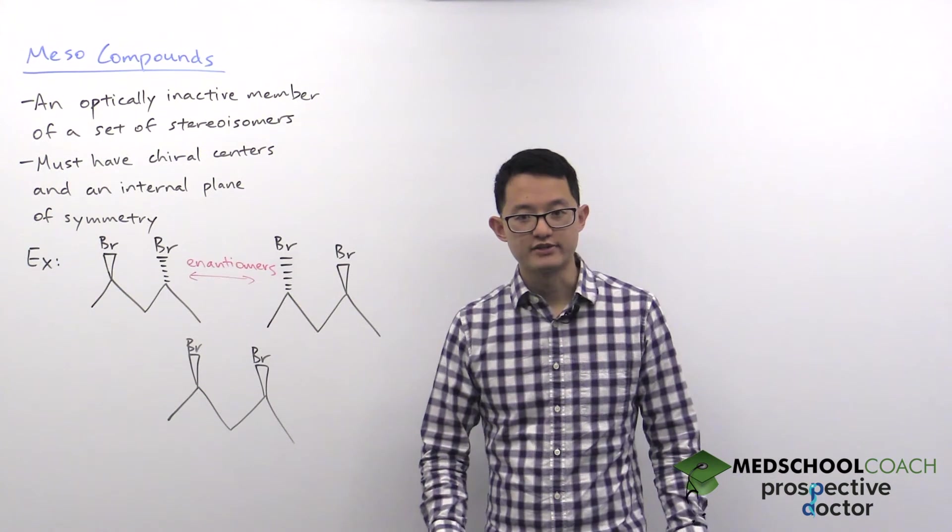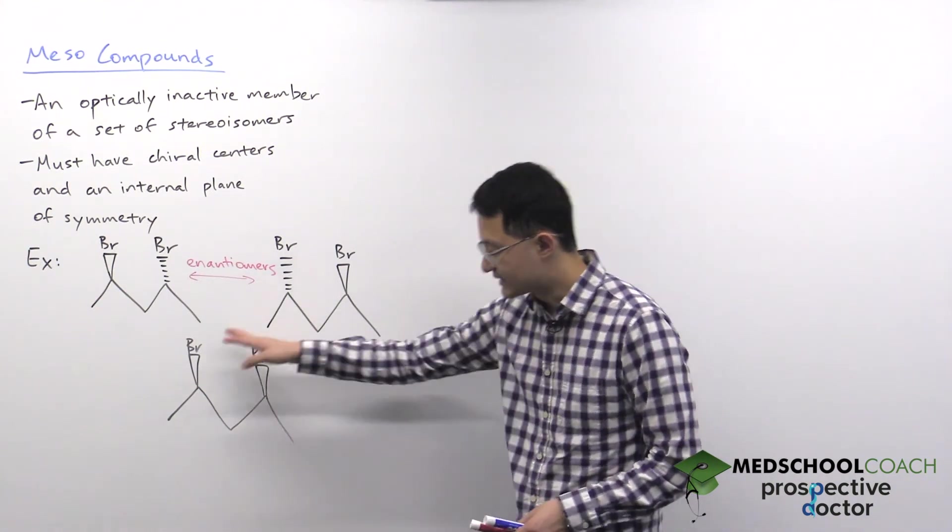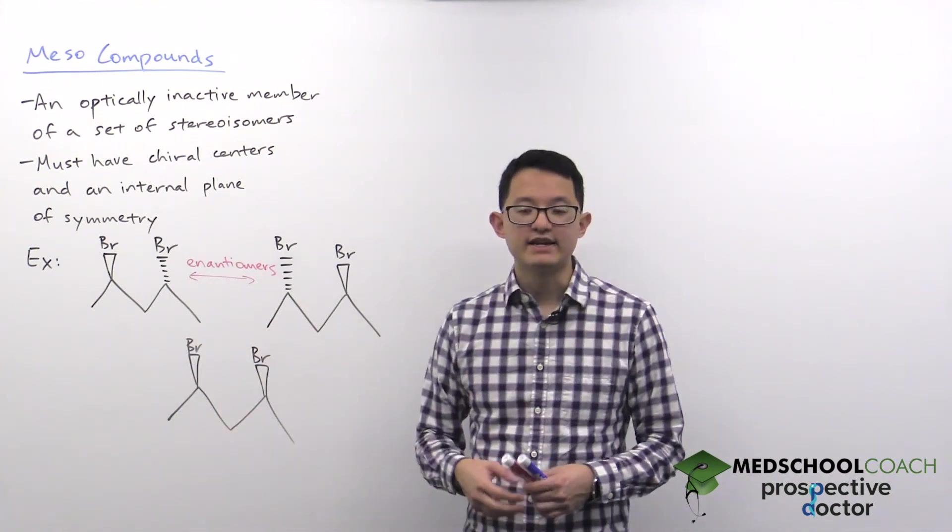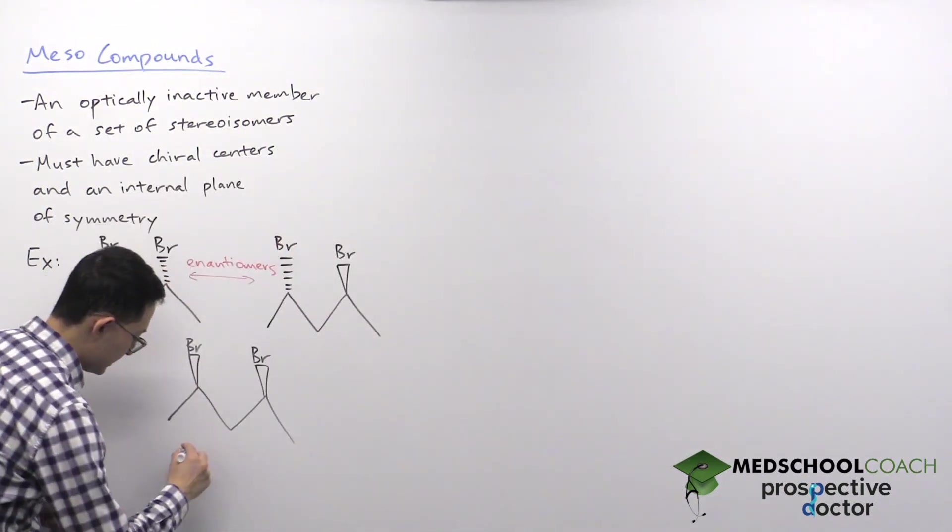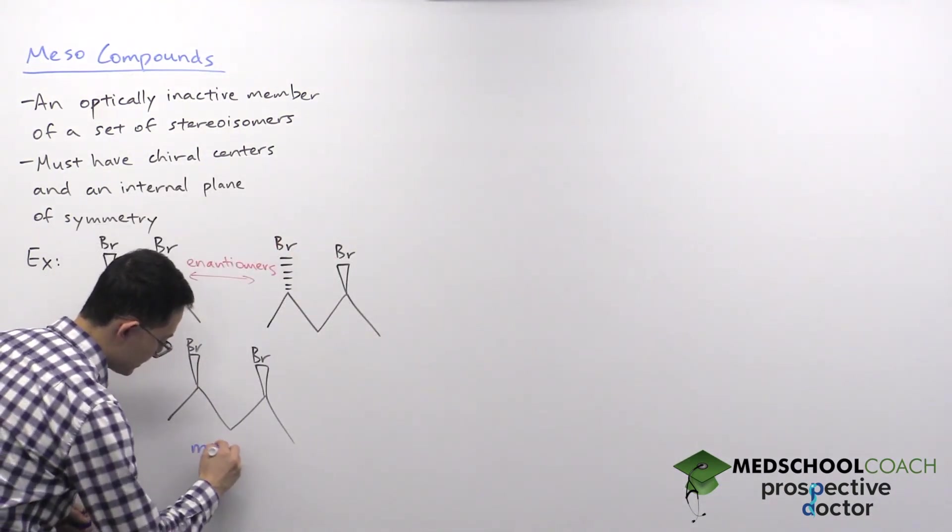And part of the reason why there's an identical compound is because this molecule right here is a meso compound. So this compound is the meso compound.